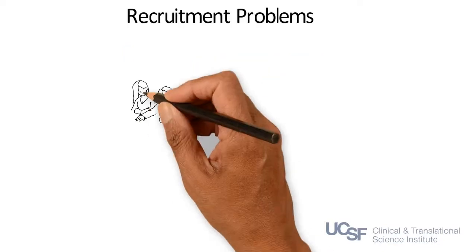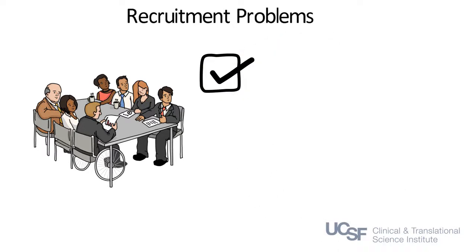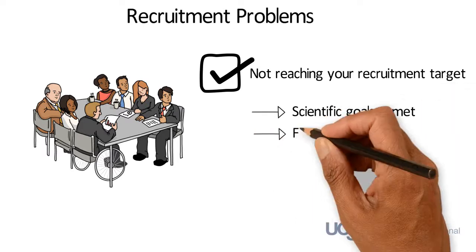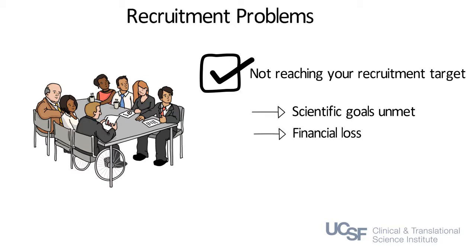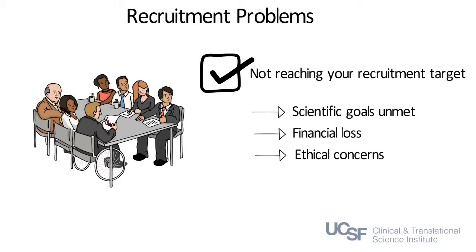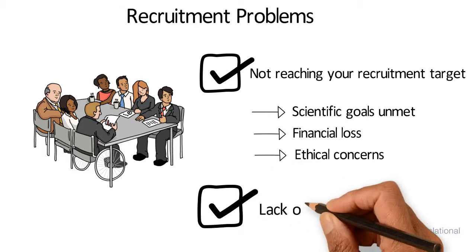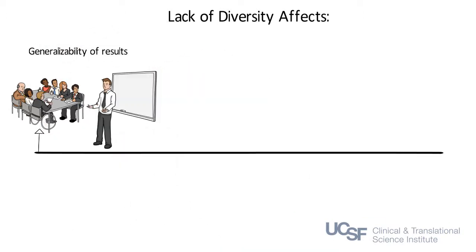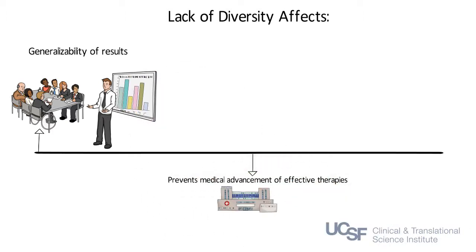Enrolling an adequate number of participants in research is a pervasive problem. If studies do not meet their target enrollment in the allotted time period, they may not complete their scientific goals and may take a significant financial loss after investing heavily in study startup. In addition, there are ethical concerns because if researchers cannot complete the study due to under-enrollment, they may not be able to carry out the study aims outlined in the participant consent form. A critical piece of the recruitment problem is a lack of diversity among research participants. When research participants do not accurately represent characteristics of the overall population of people with a particular condition, the study results may not be generalizable and certain populations may not receive the same benefit from research innovations.